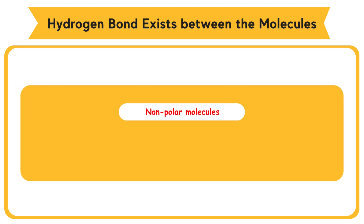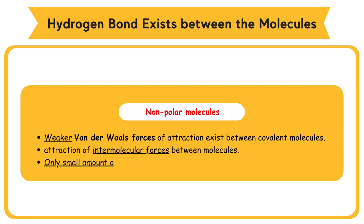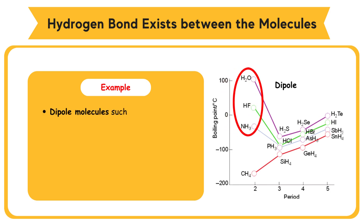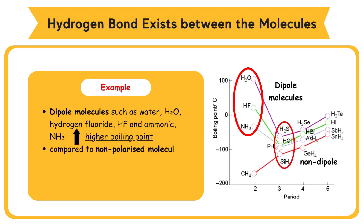For nonpolar molecules, weaker Van der Waals forces of attraction exist between the covalent molecules. Van der Waals forces is a general term used to define the attraction of intermolecular forces between molecules. Only a small amount of heat is needed to overcome the Van der Waals forces of attraction between the molecules. The graph shows that dipole molecules such as water H2O, hydrogen fluoride HF, and ammonia NH3 have higher boiling points compared to nonpolar molecules such as dihydrogen sulfide H2S, hydrogen chloride HCl, and others.